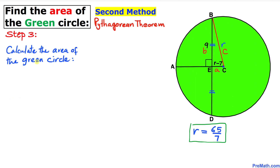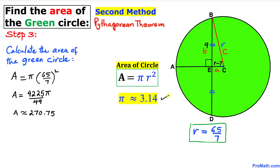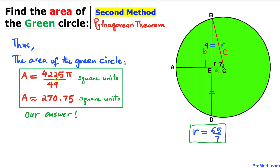For the final step, let's calculate the area of the green circle with radius 65 divided by 7. Using area equals pi R squared: area equals pi times (65/7) squared, giving 4225π over 49 square units. Replacing pi with 3.14, the area is approximately 270.75 square units — the same result as Method 1.